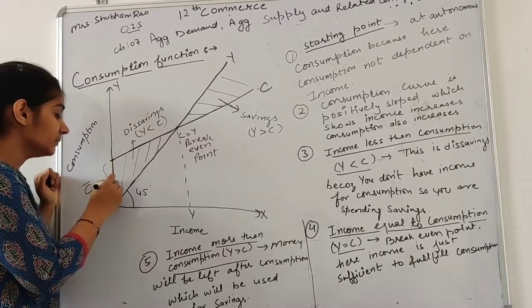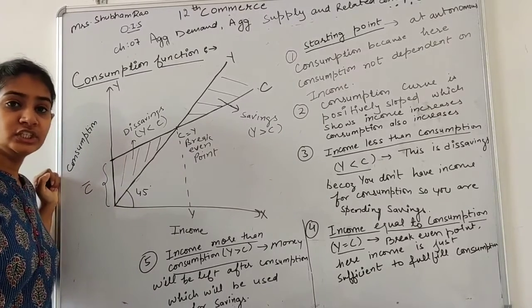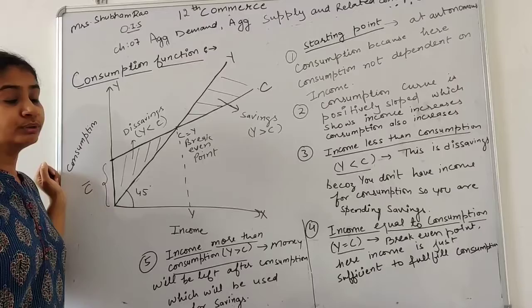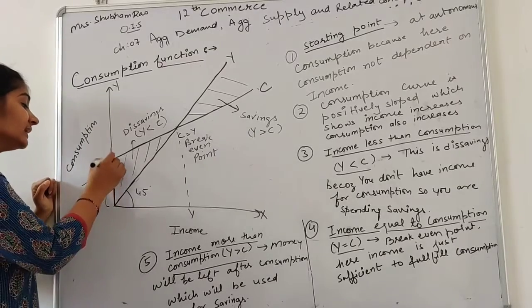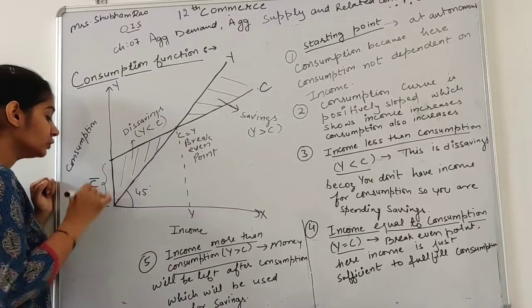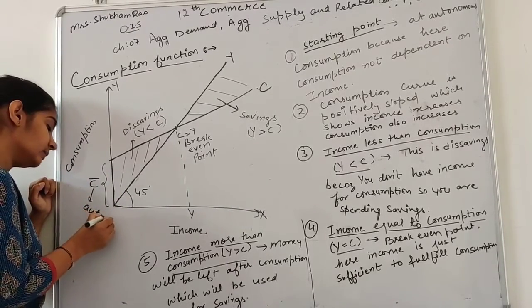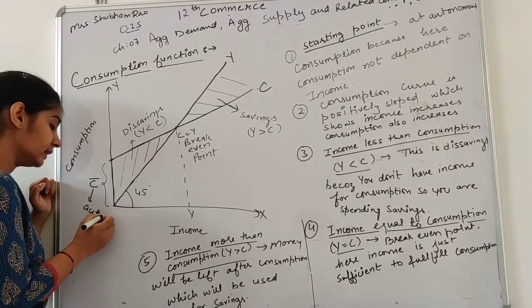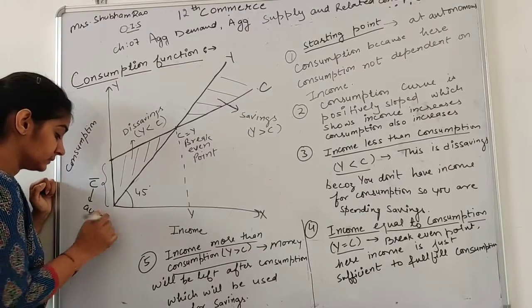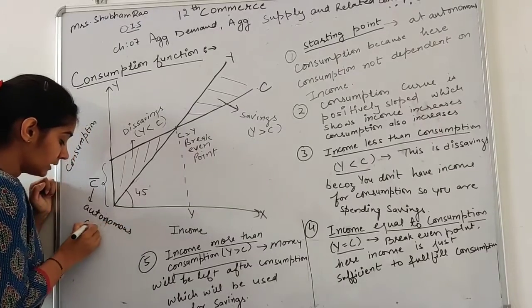Because we have done a minimum level of consumption to survive, to live. This is autonomous consumption, C bar.